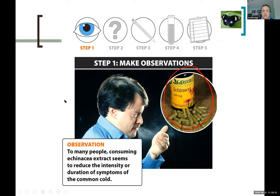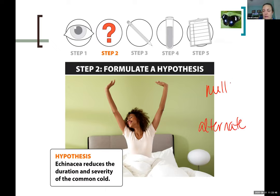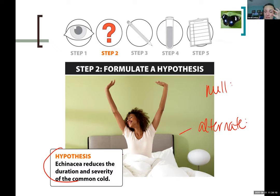Now you develop a hypothesis. One thing I want to discuss is the null hypothesis versus the alternate hypothesis. Step two is formulating a hypothesis. The hypothesis listed here is: echinacea reduces the duration and severity of the common cold.